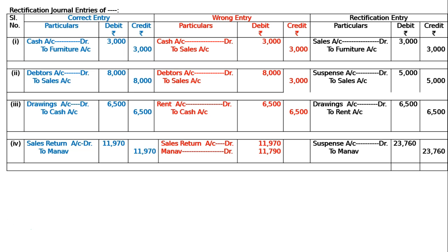Being sales account and amount correct, suspense account is debited to Manav to rectify the mistake. The rectification is now complete. Totaling both the debit and credit columns of the rectification journal gives thirty-eight thousand two hundred sixty on both sides, and this is the final answer.